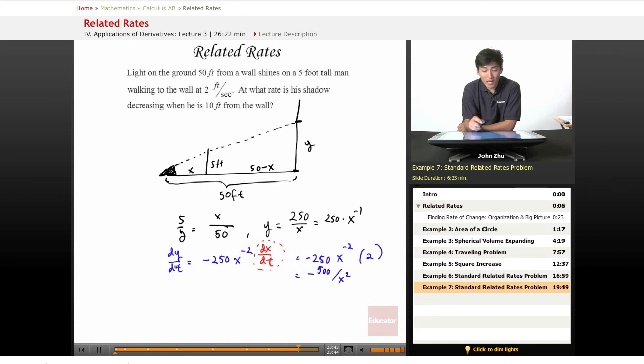So now we have this expression for dy dt and x squared, and we're looking for the rate at which his shadow is decreasing. So we're looking for dy dt. This is what we're looking for. So all we need is to find x. So what is x? When the shadow is decreasing, when he is 10 feet from the wall, at what rate is his shadow decreasing? At 10 feet, here's your hint, they're always going to give you either what you need to solve the problem or enough information to help you solve for what you need.